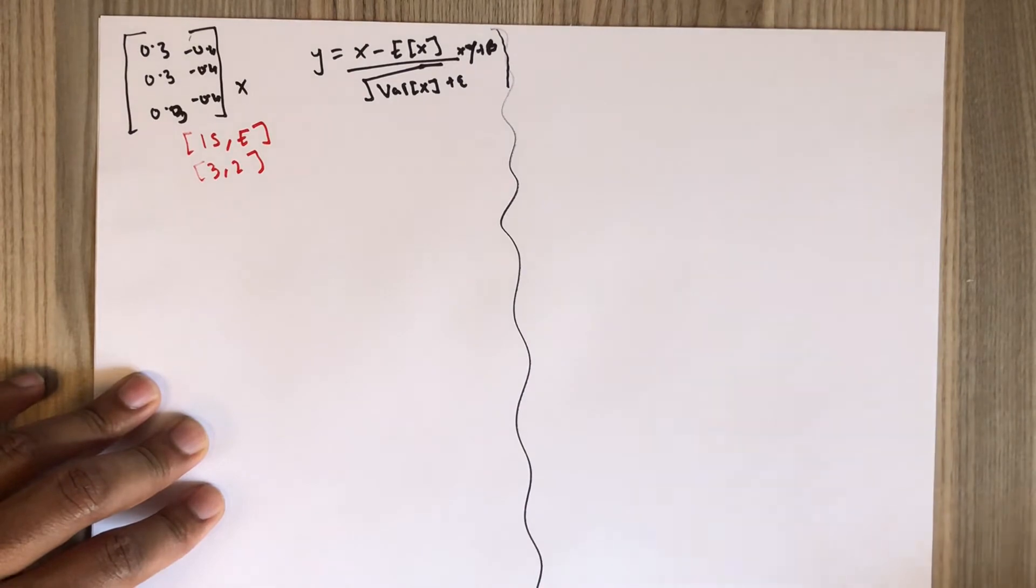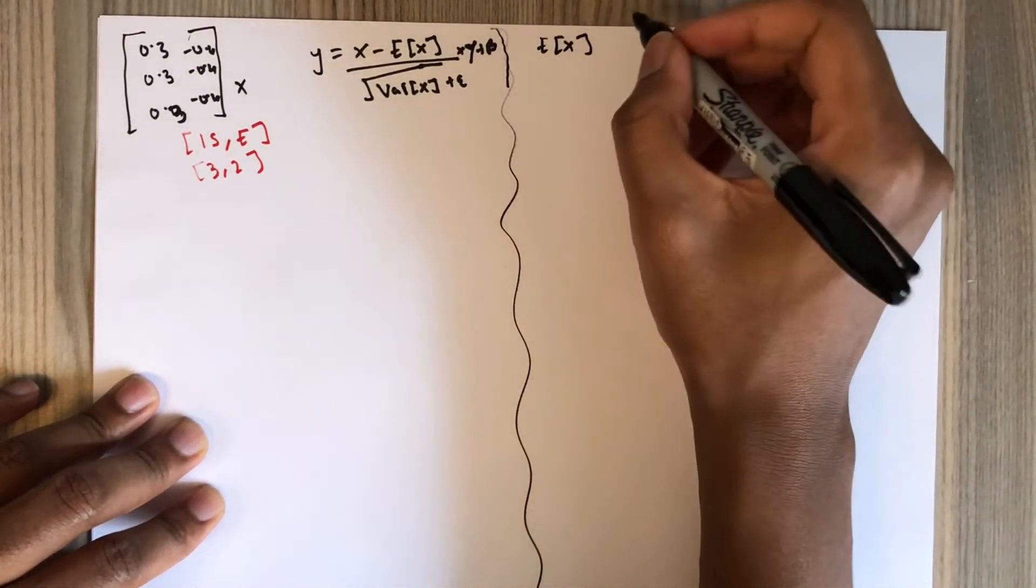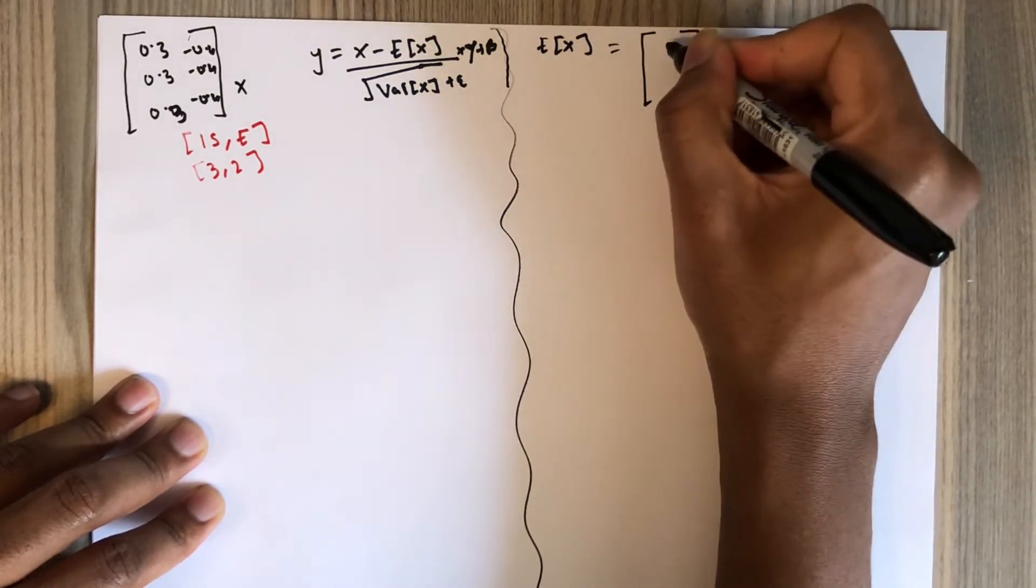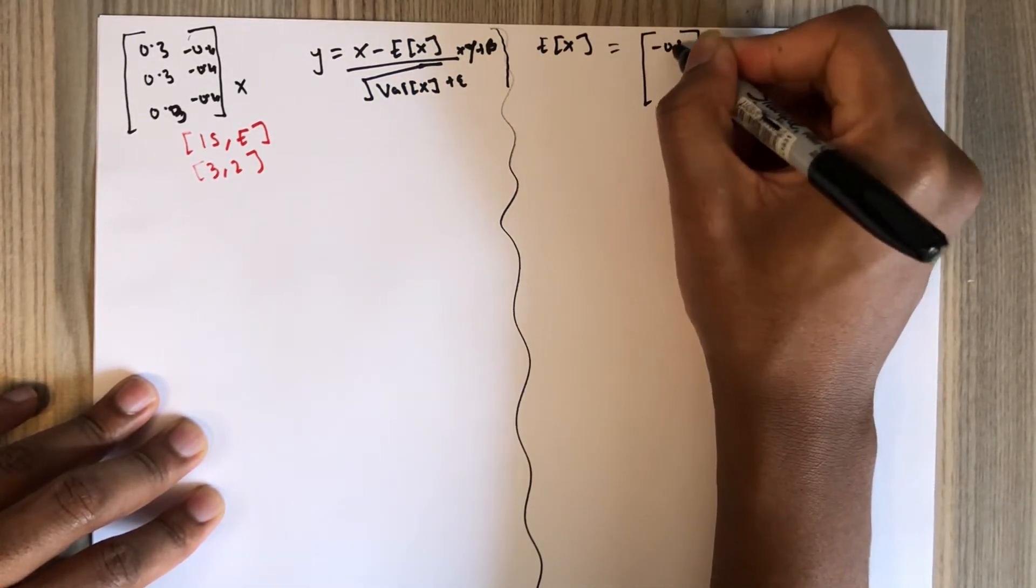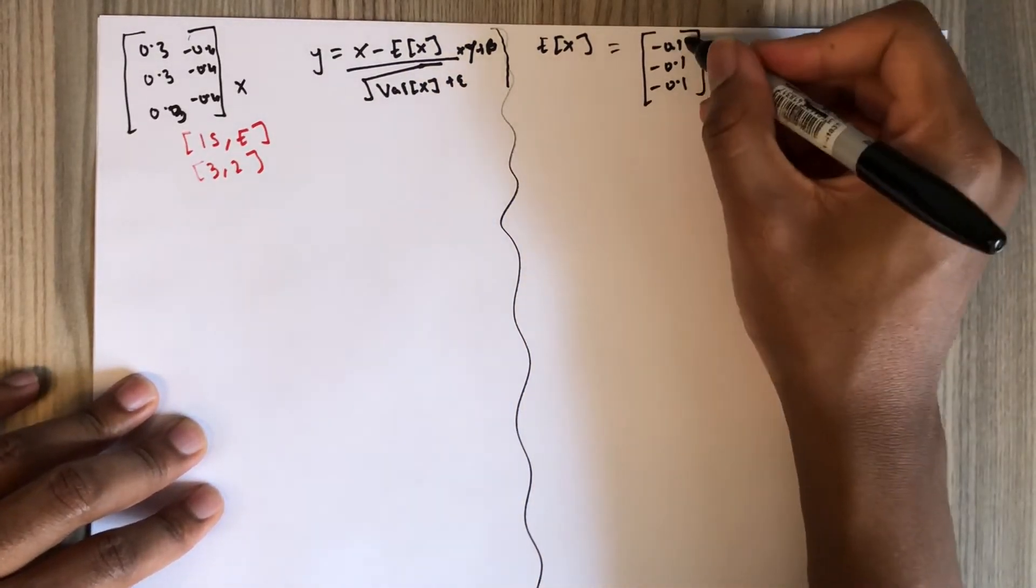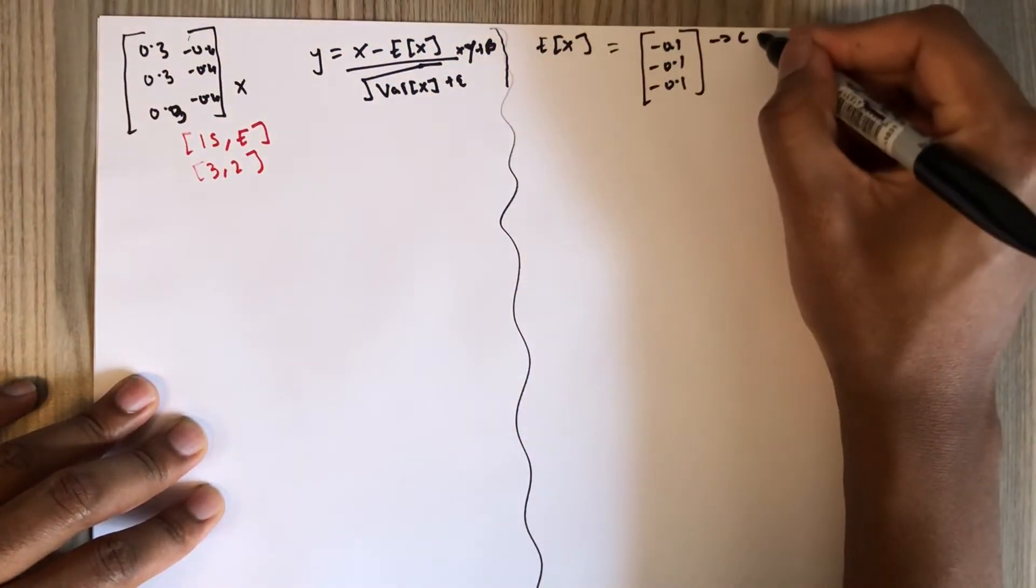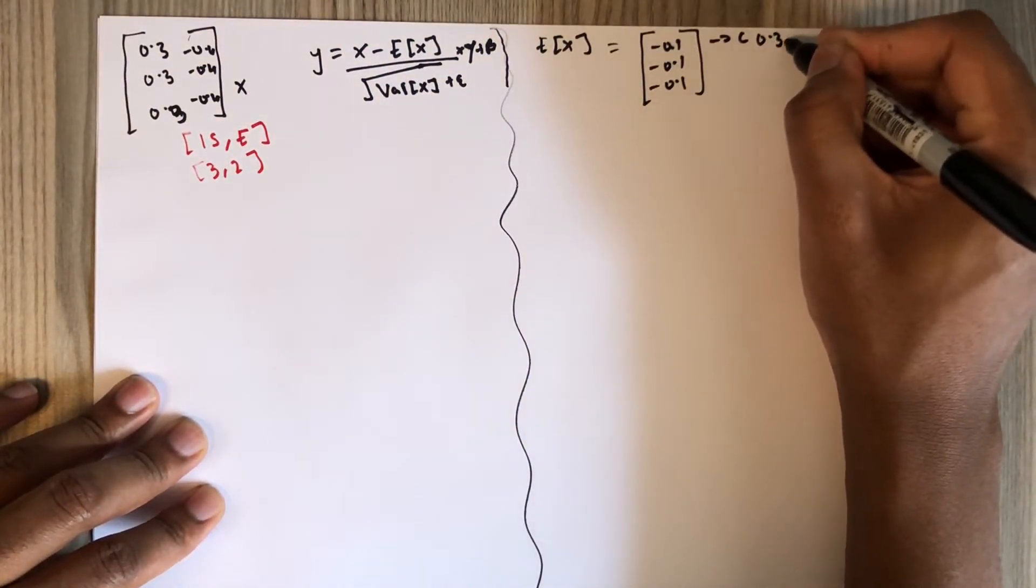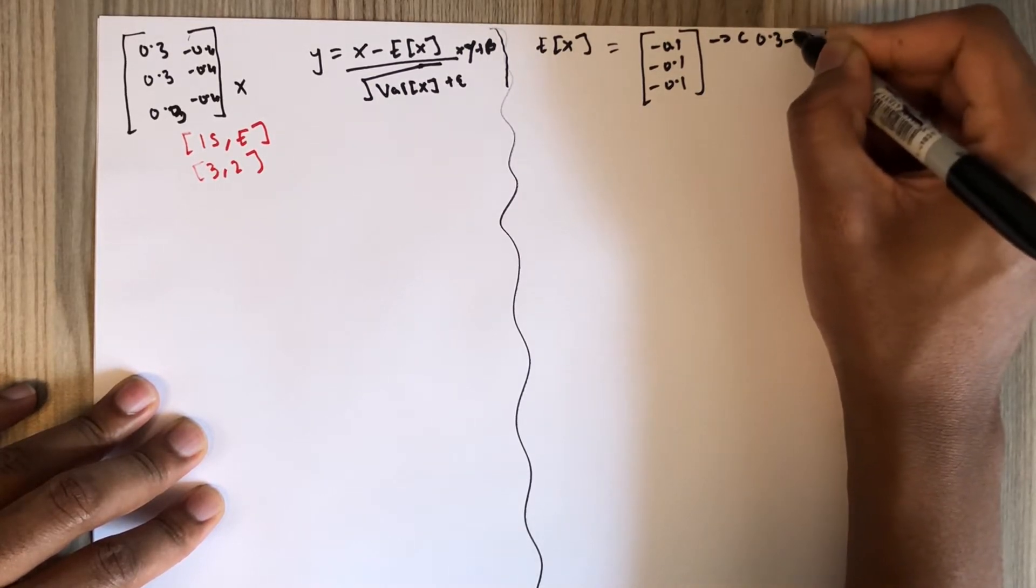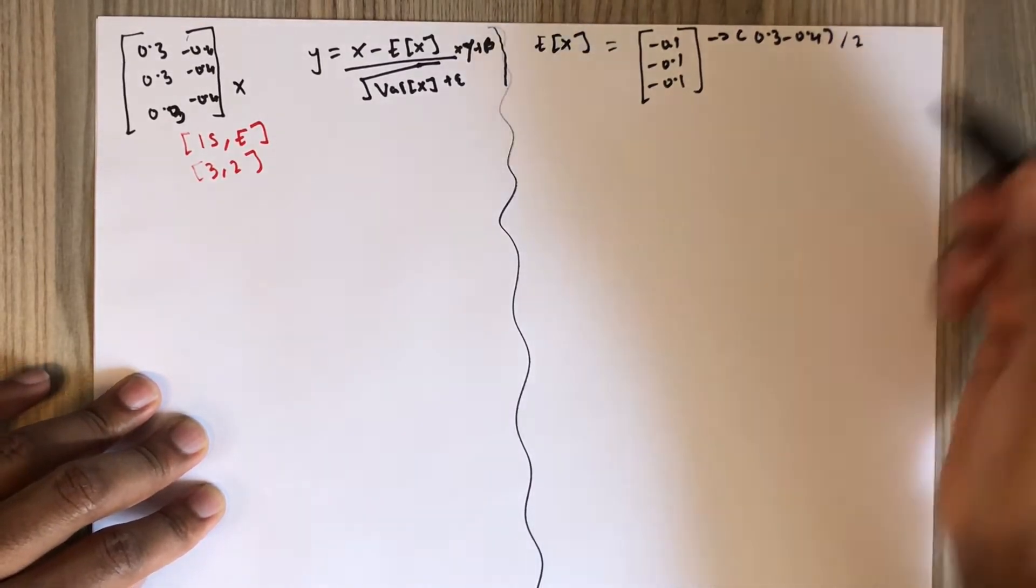I have already calculated the mean: 0.1, -0.1, -0.1. How did I calculate the first -0.1? It is 0.3 plus -0.4, divided by 2.